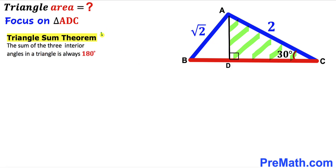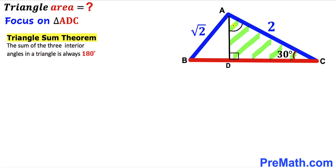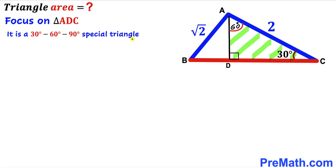Let's recall the triangle sum theorem: the sum of three interior angles in a triangle is always 180 degrees. In triangle ADC, one angle is 30 degrees and another is 90 degrees, so the third angle must be 60 degrees. This means triangle ADC is a 30-60-90 special triangle.